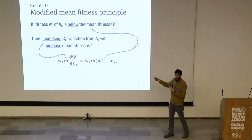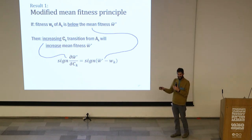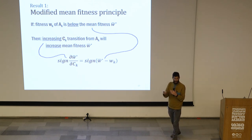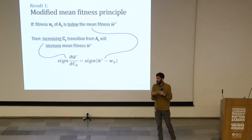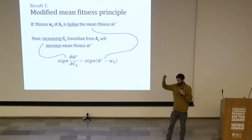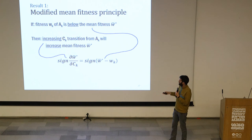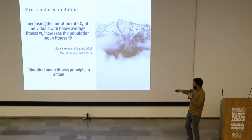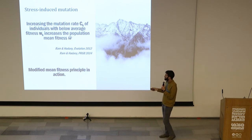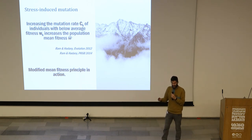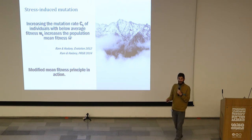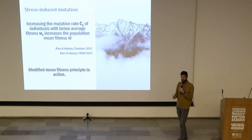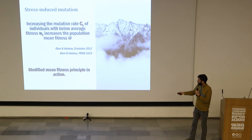It's beneficial for the population if below-average individuals increase their transition rate — if they stop being their type and try something else, if they mutate, migrate, or explore. But this is a population-level advantage. As Lilach mentioned today, there is often a contrast between what benefits the population and what benefits the individual. We already saw a glimpse of this result in a previous paper, where we found that increasing the mutation rate of below-average individuals increases population mean fitness — this is part of what's called stress-induced mutation, suggesting that even in a constant environment it's best if below-average individuals increase their mutation.